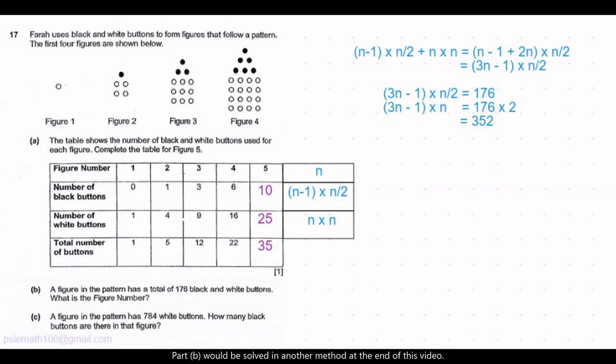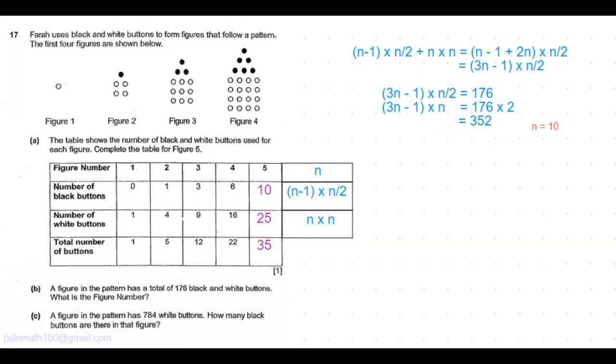3 times n times n is around 300. So if we have the value of n to be around 10, 3 times 10 is 30, 30 times 10 is around 300. So we know the value of n is somewhere around 10.